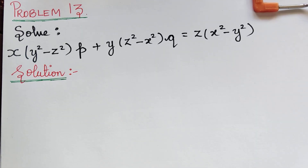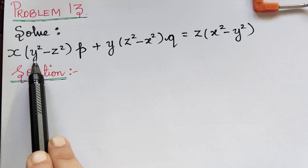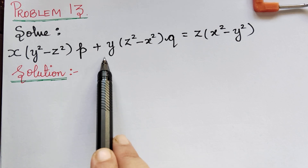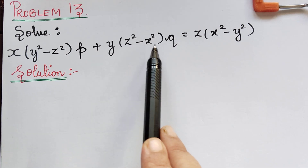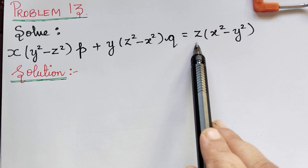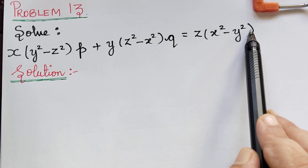Dear students, under the topic Lagrange's partial differential equation, here we have problem 13. The question is: x(y² - z²)p + y(z² - x²)q = z(x² - y²).